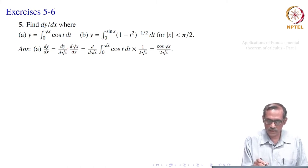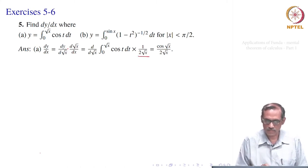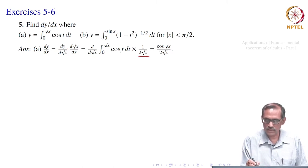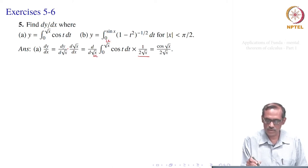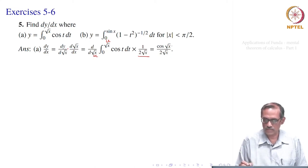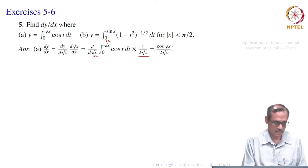So, d(root x) by dx is 1 by 2 root x, and the derivative of the integral from 0 to root x is — treating it as something like u, dy by du of integral 0 to u — that gives you cos u, or cos(root x). Therefore, the answer is cos(root x) divided by 2 root x.